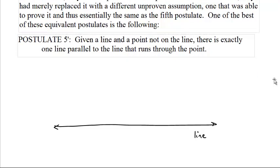What are we saying? If you've got a line and you've got a point that's not on the line, there is exactly one parallel line going through the point parallel to the line.